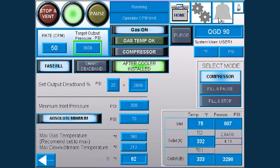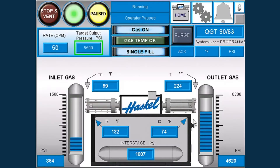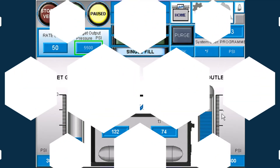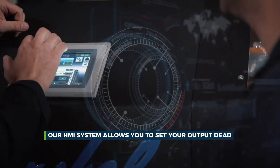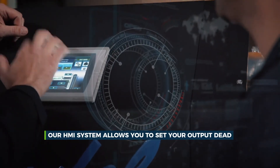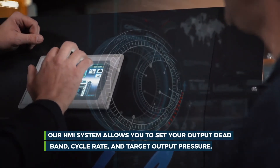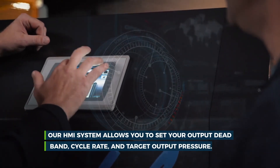You also get to view indicators for the inlet pressure, inlet temperature to first compression, outlet temperature for second stage, heat exchanger interstage accumulator pressure, temperature leaving the second stage, and the outlet pressure. What's more, our HMI system allows you to set your output deadband, cycle rate, and target output pressure.